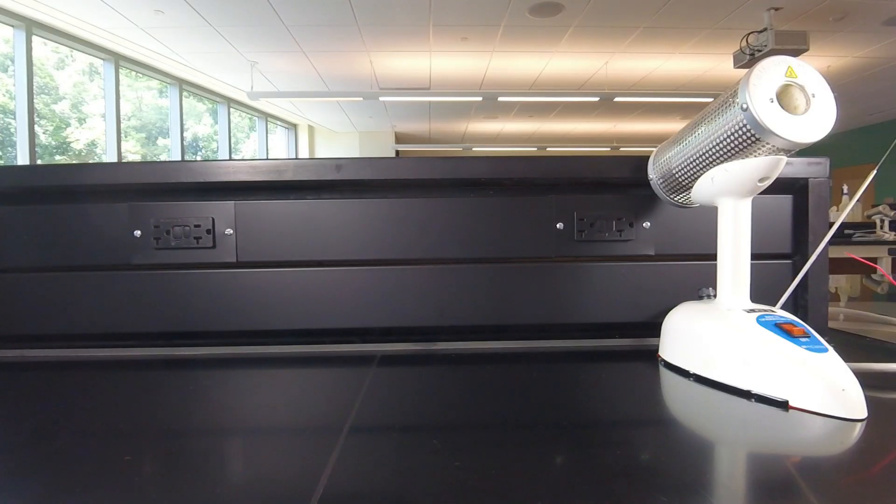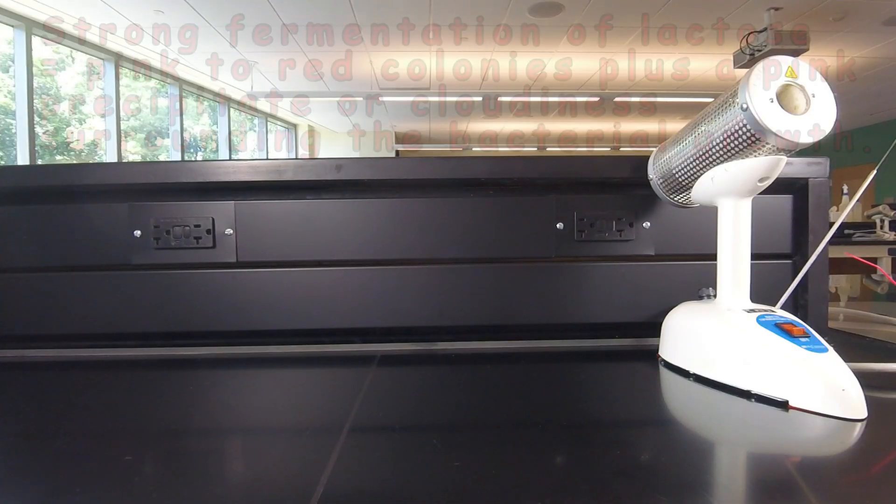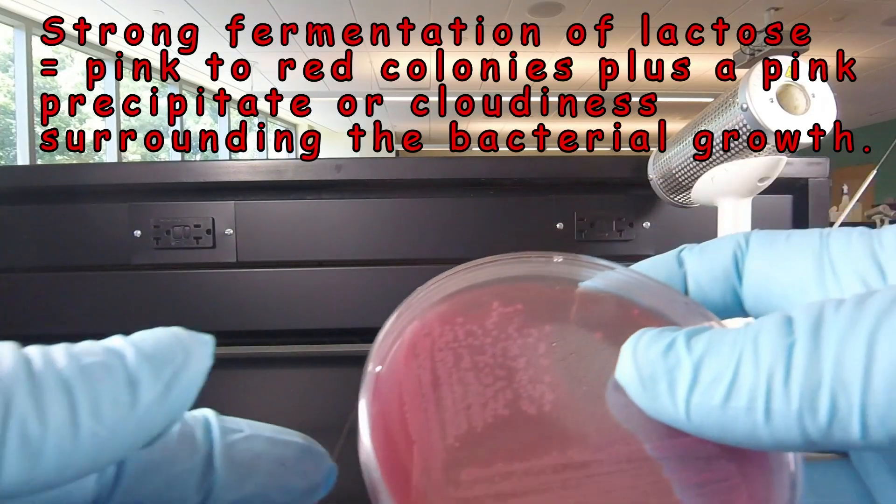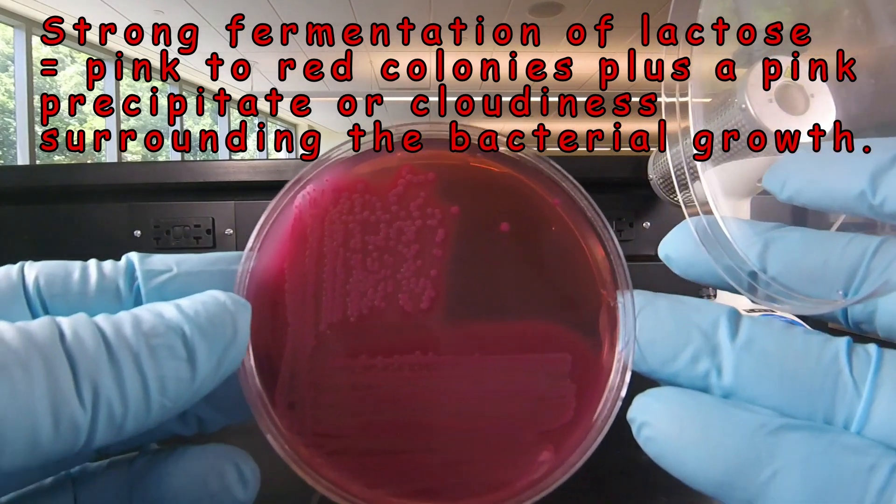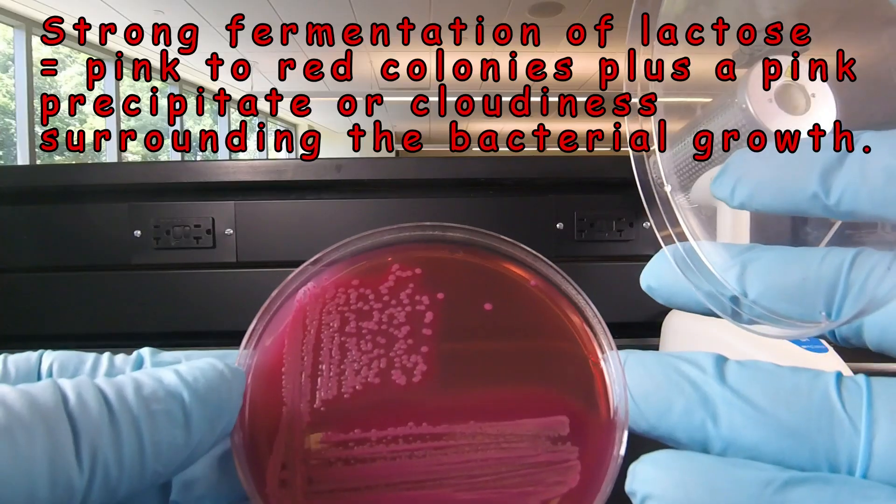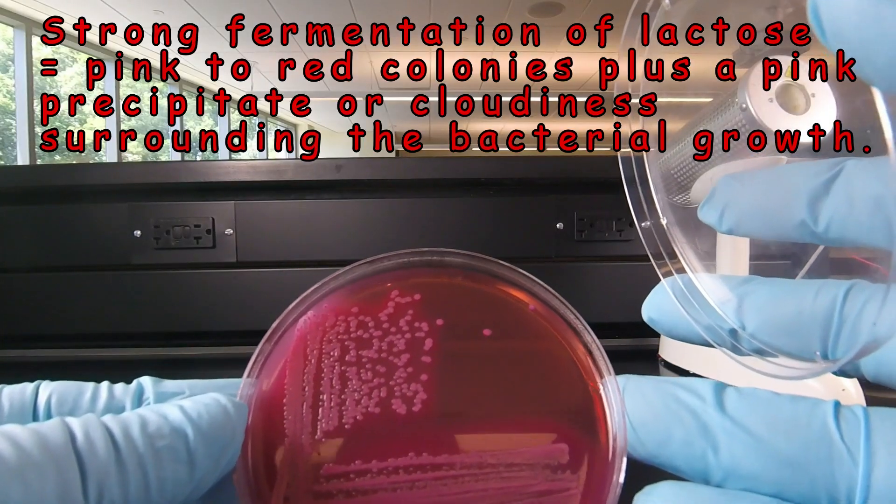If a bacterium strongly ferments lactose, such as Escherichia coli, then the acid that's produced as an end product of fermentation eventually lowers the pH of the agar and the bacteria, and this causes the neutral red dye to be absorbed into the colonies, causing them to appear pink to red. And in addition, if there's strong fermentation,